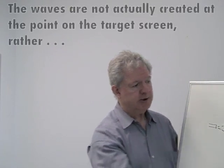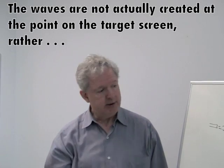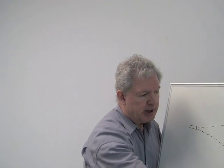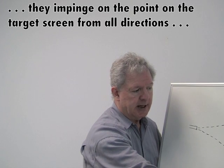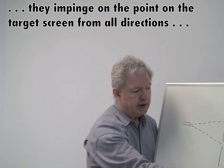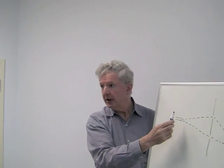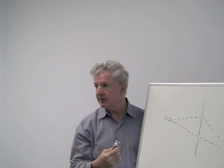So they are not actually created at the point. Rather they are waves. In my theory they impinge on the point from all directions. And the interactions at the point make them all coherent with each other, so that they will interfere at the source as if they were a single wave.